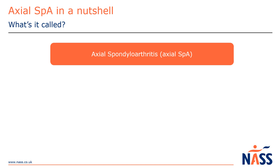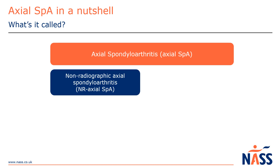The terminology has changed a little in recent years, but it is still quite a mouthful. Axial spondyloarthritis, known as axial SpA for short, is the umbrella term. Some people are diagnosed with non-radiographic axial spondyloarthritis.